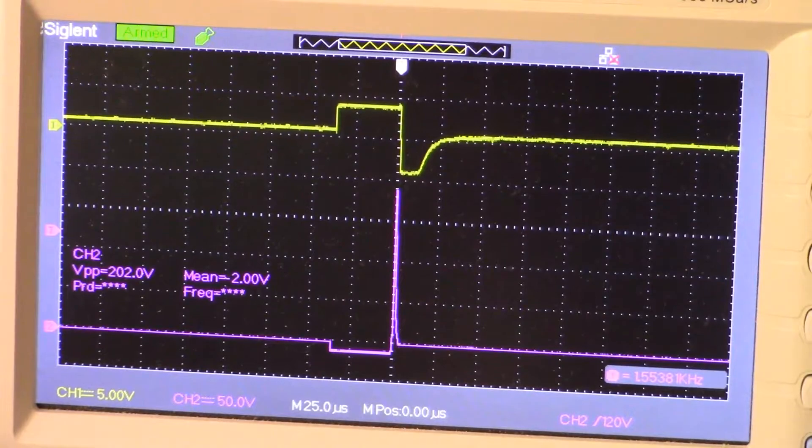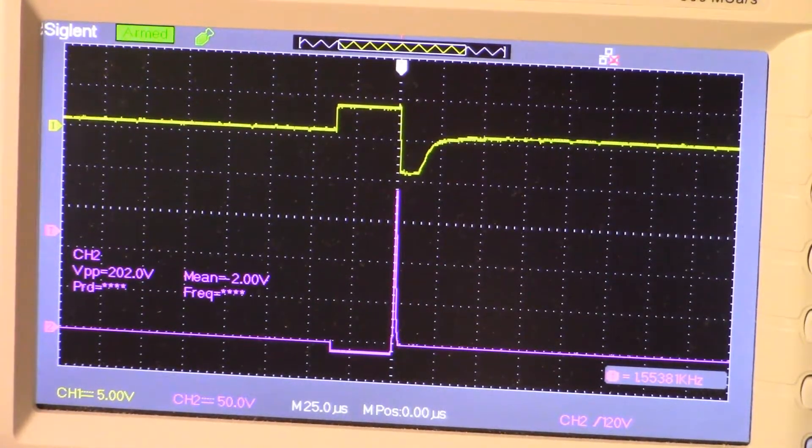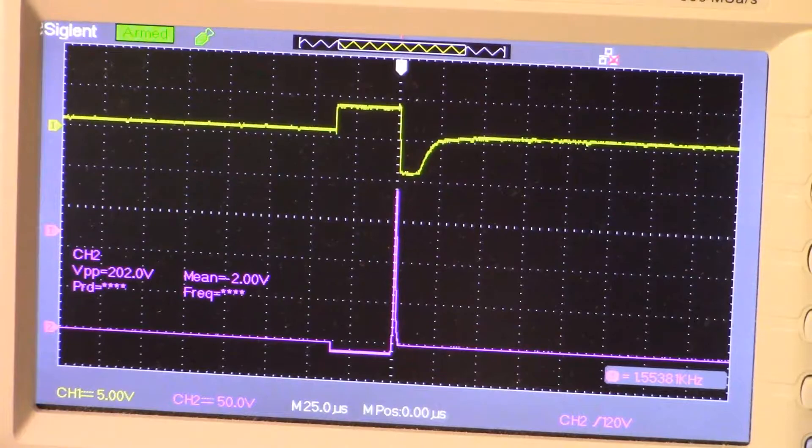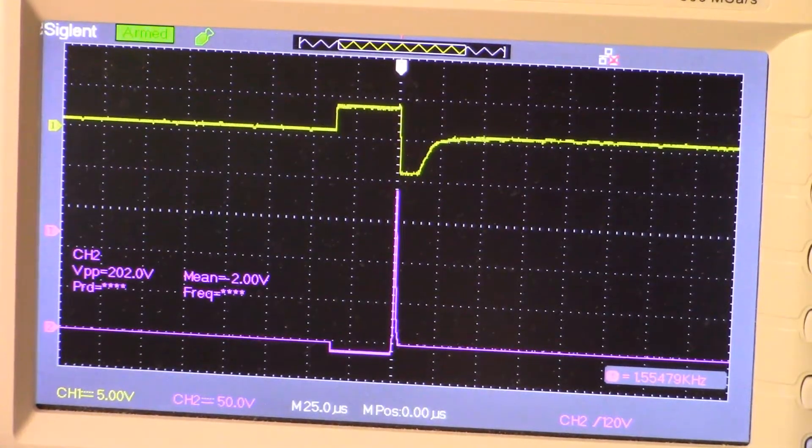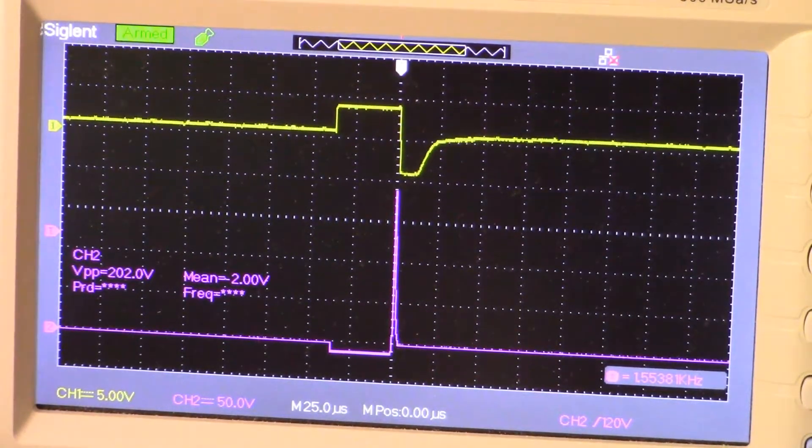What we have on the screen here is the output of the preamp, which is test point 4, in relation to the flyback signal. The flyback is from test point 2. Channel one on top is the output of the preamp test point 4, and the flyback signal test point 2 is on the bottom.